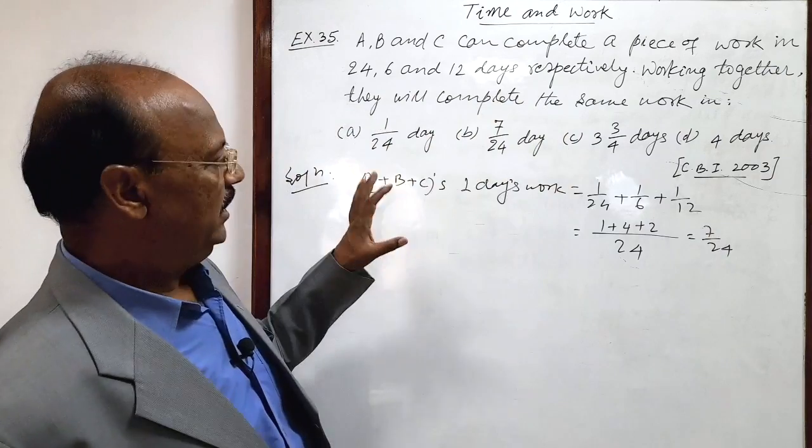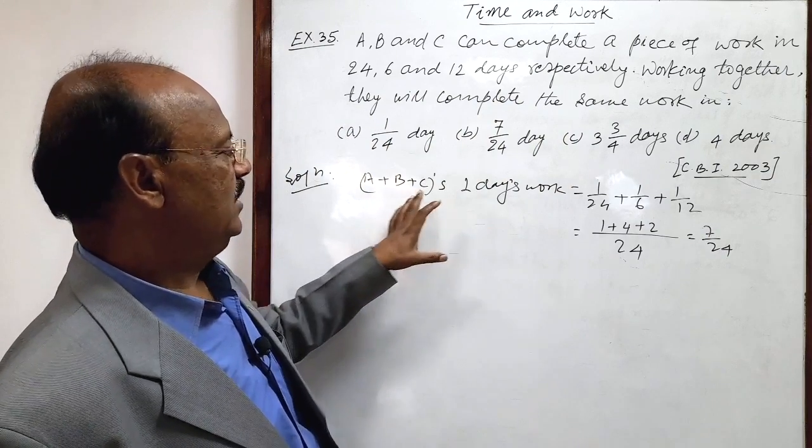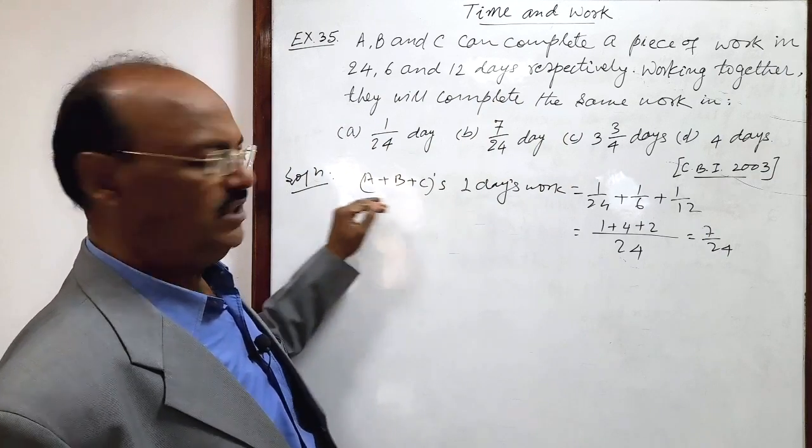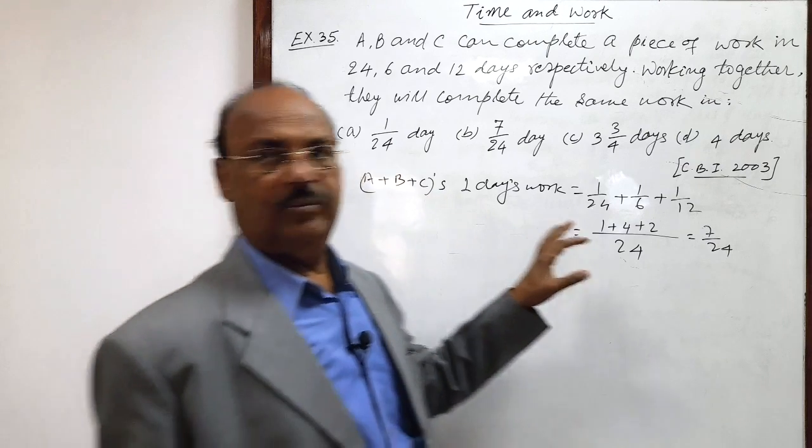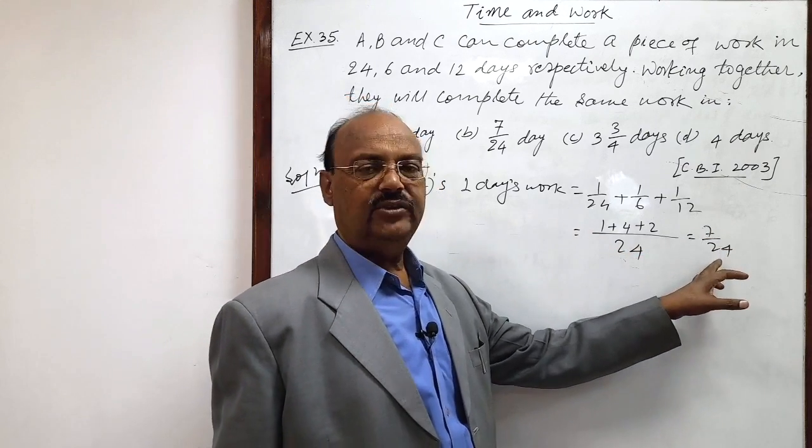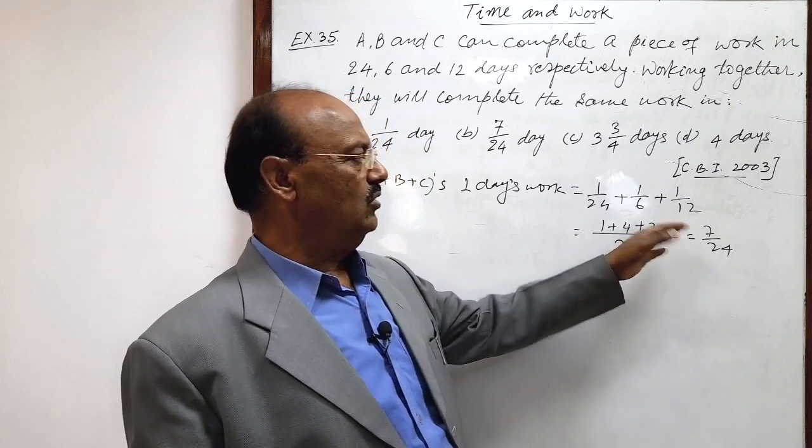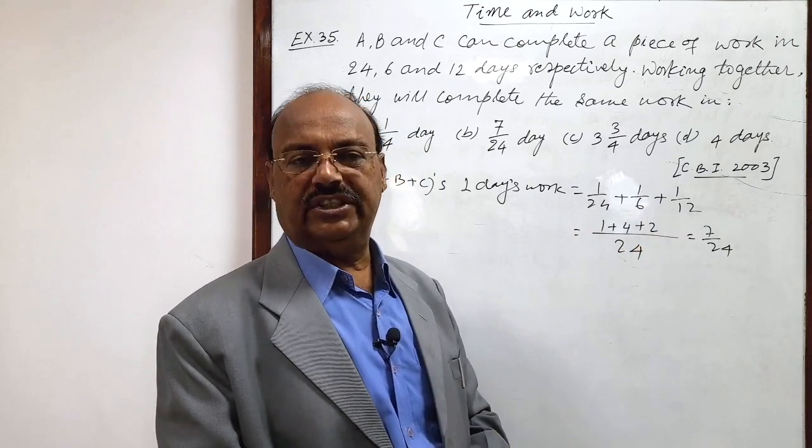In one day A plus B plus C when A, B, C are working together, the amount of work done is 7 by 24 and number of days and amount of work is reciprocal to each other.